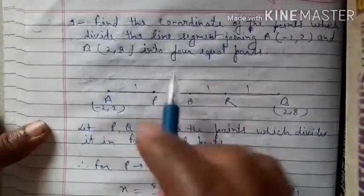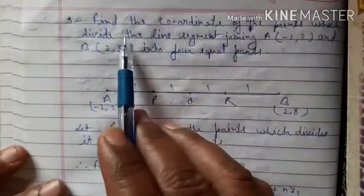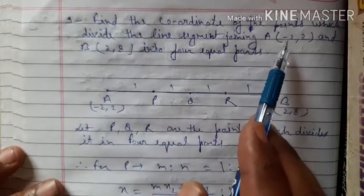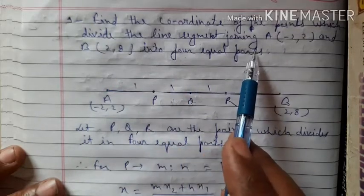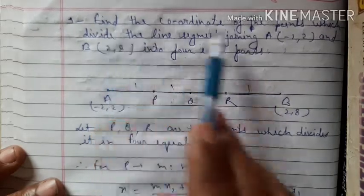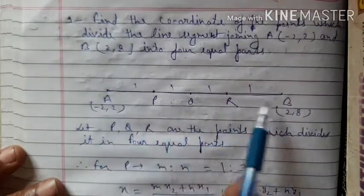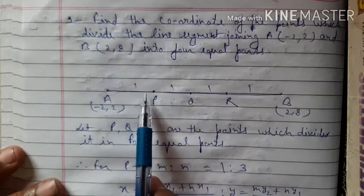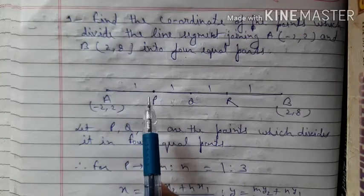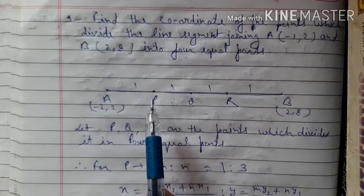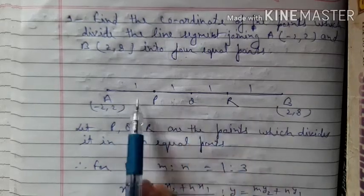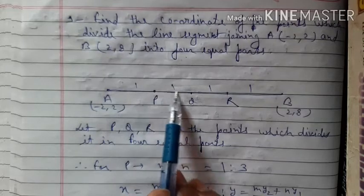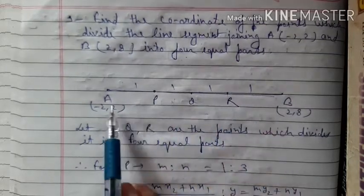Now let us see question number 9. Find the coordinates of the point which divides the line segment joining A(-2, 2) and B(2, 8) into 4 equal parts. A is (-2, 2) and B is (2, 8). We need to find points P, Q, R which divide it into 4 equal parts — so each part is equal.